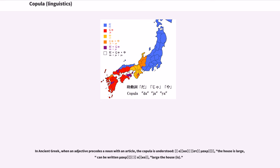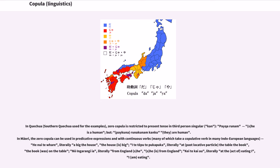In ancient Greek, when an adjective precedes a noun with an article, the copula is understood. In Quechua (southern Quechua), zero copula is restricted to present tense in third-person singular: 'Pechua runam' (he is a human), but 'pechuna runa kunam kanku' (they are human). In Maori, the zero copula can be used in predicative expressions and with continuous verbs, many of which take a copulative verb in many Indo-European languages: 'he nui te fare' (literally 'a big the house' = the house is big).